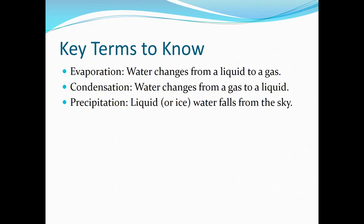There are a few key terms I want you to know about that we covered last time. The terms are evaporation, condensation, and precipitation. We also talked about melting, freezing, sublimation, and deposition, but for right now let's focus on these three: evaporation — going from liquid to gas; condensation — the opposite, going from gas to liquid; and precipitation — stuff falling from the sky.